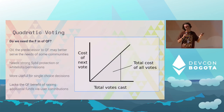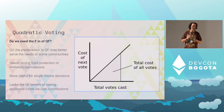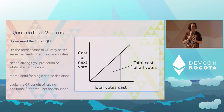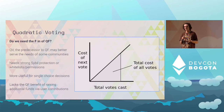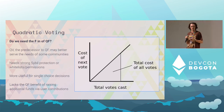Back to quadratic voting — do we really need the F in QF? There are plenty of great quadratic voting experiments happening, and it might better serve the needs of some communities. You really need strong sybil protections or a whitelist system. QV is more useful for single-choice decisions like A versus B, versus deciding on what scale to fund something. Of course, it lacks the benefit of raising additional funds via user contributions.